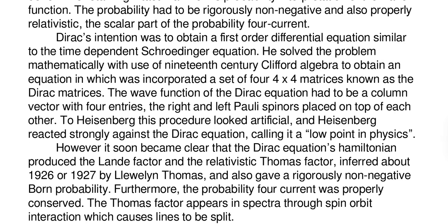Dirac's intention was to obtain a first-order differential equation similar to a time-dependent Schrödinger equation. He solved the problem mathematically with use of the 19th century Clifford Algebra to obtain an equation in which was incorporated a set of four 4x4 matrices known as the Dirac matrices. The wave function of the Dirac equation had to be a column vector with four entries, the right and left Pauli spinors placed on top of each other.